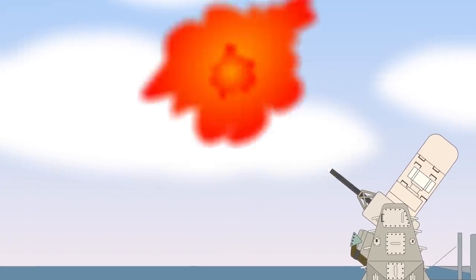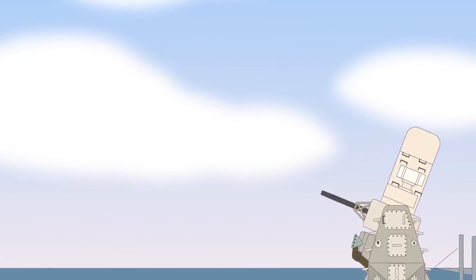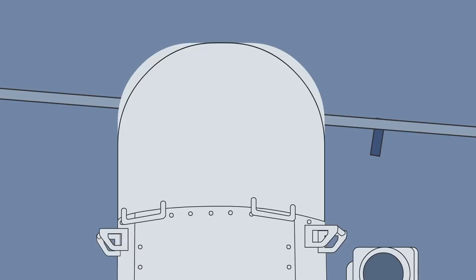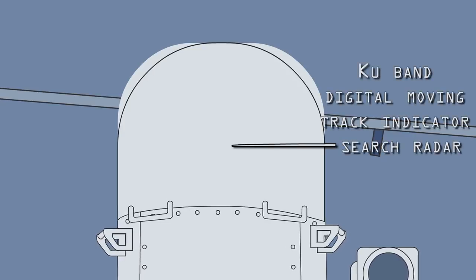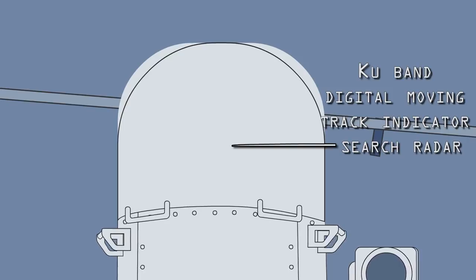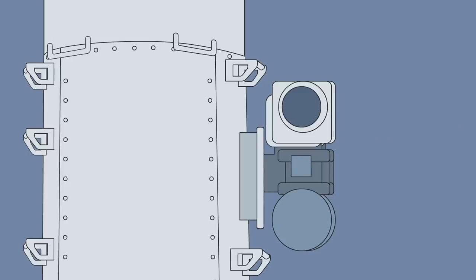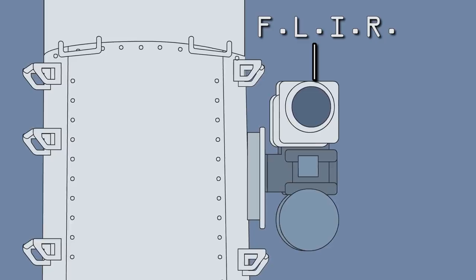If the M61 Vulcan is the system's mode of firepower, then the two radar antennas are the system's eyes. The upper antenna is the KU-band Digital Moving Track Indicator Search Radar. It rotates at 90 revolutions per minute inside the barrel-shaped radome, and is responsible for identifying the target. In the latest version, the antenna was upgraded with a forward-looking infrared camera, or FLIR, that detects infrared radiation of the target.